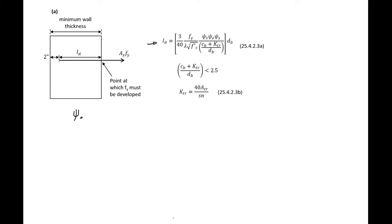We're not given any information on the epoxy bar factor, and we know our bar is larger than a number seven and we have normal weight concrete, so all of these factors are going to be equal to 1.0.